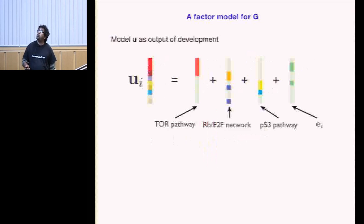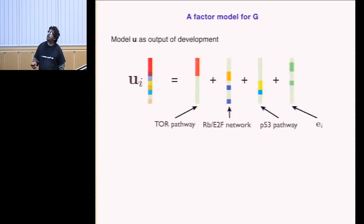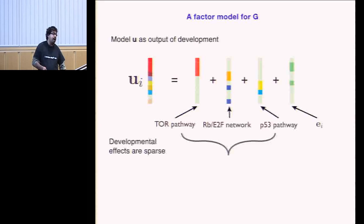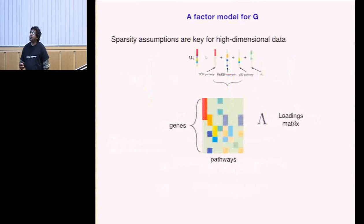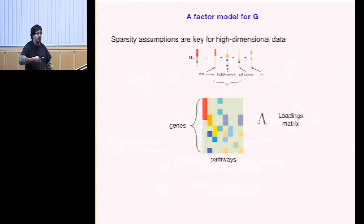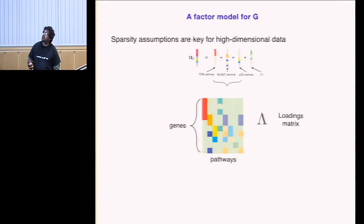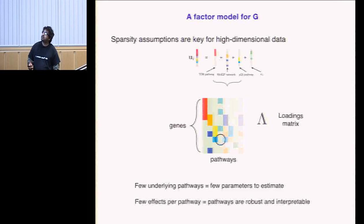From a developmental perspective, this can be decomposed into factors — one pathway, the RB or P53 pathway, for example — with extra noise. There aren't many factors or developmental pathways, and within each pathway not many genes are affected. In this factor model framework, you have a loading matrix where you take a linear combination of factors to explain the additive genetic variance-covariance. So you have a genes-by-pathways loading matrix, and there are very few parameters to estimate.